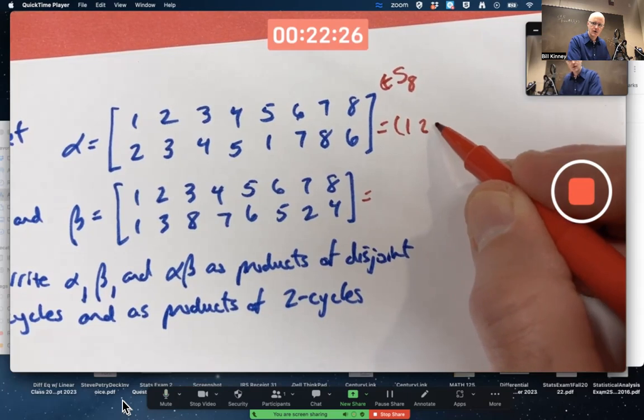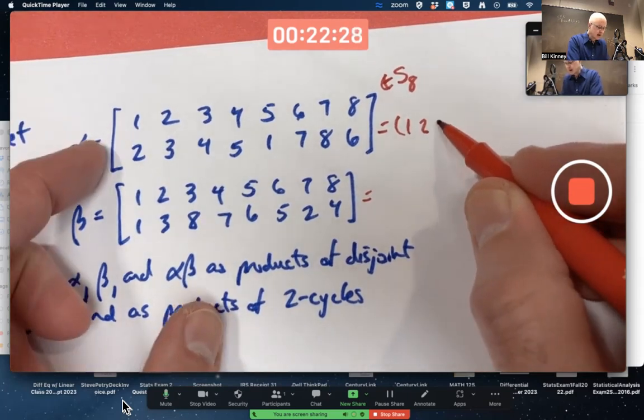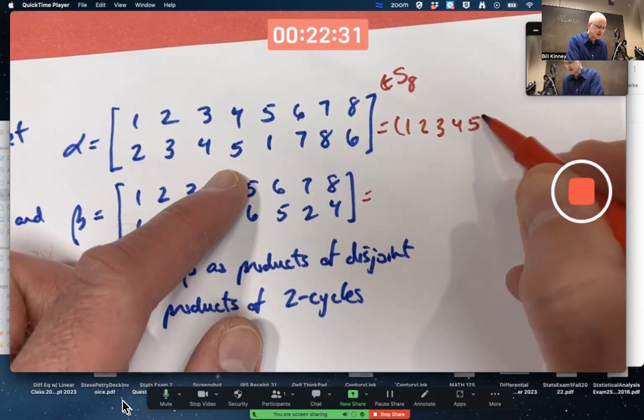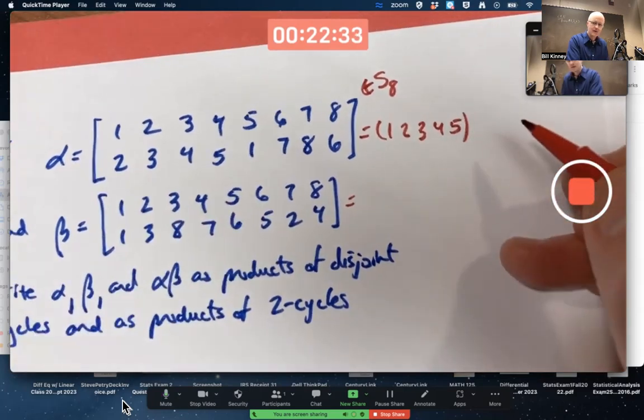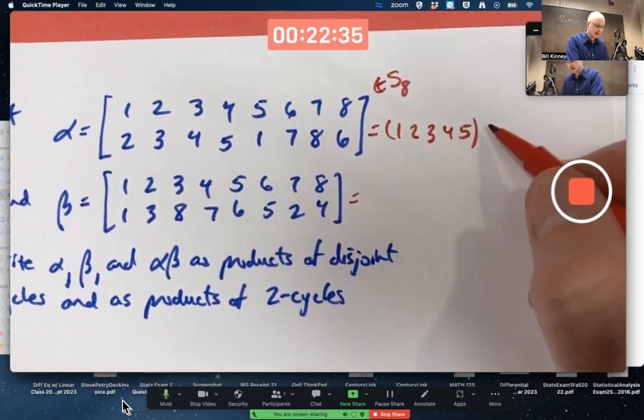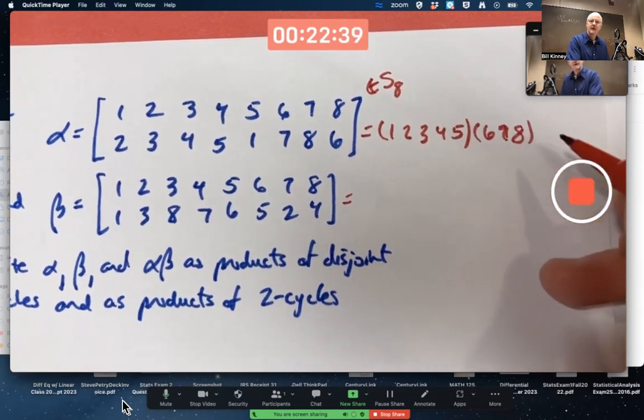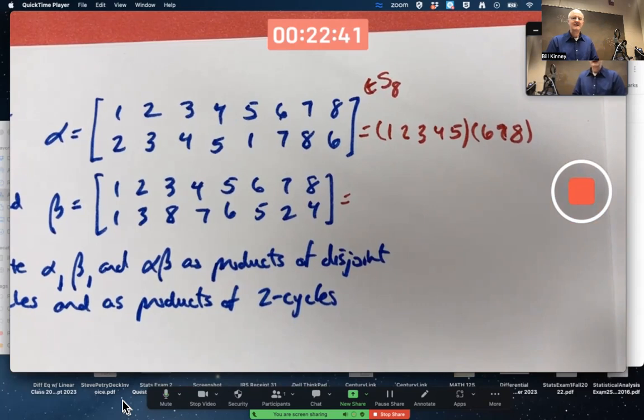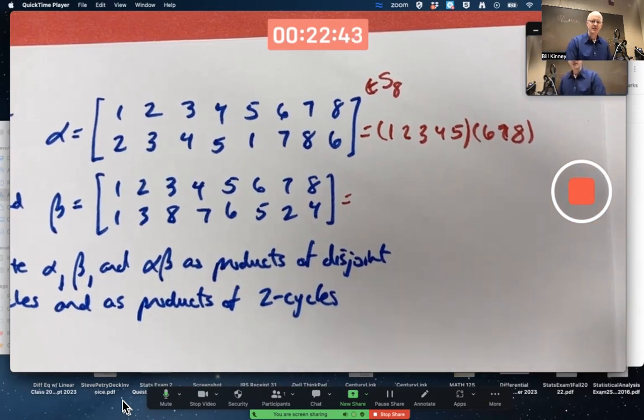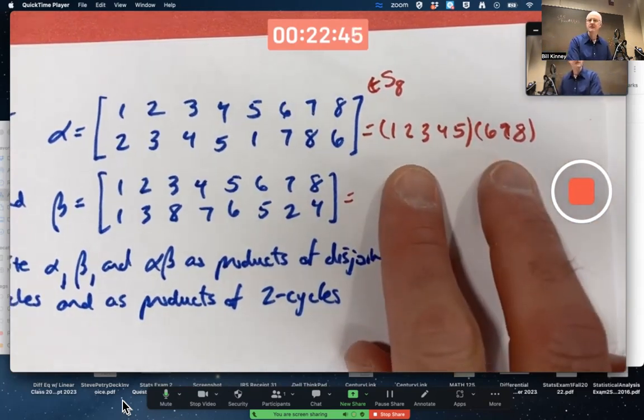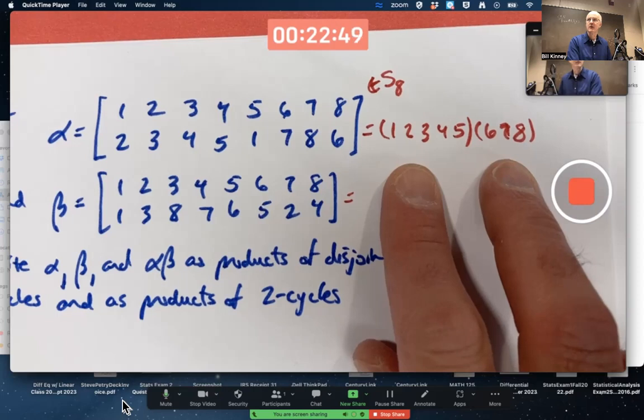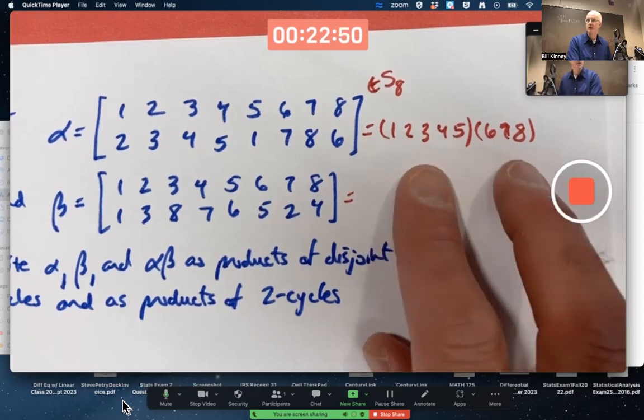One gets mapped to 2. You can see here which gets mapped to 3, which gets mapped to 4, which gets mapped to 5, which gets mapped back to 1. There's a 5 cycle, and then 6, 7, and 8 are permuted around. So that's writing alpha as a product of disjoint cycles. Those do commute because they're disjoint. I could have written them in the other order.